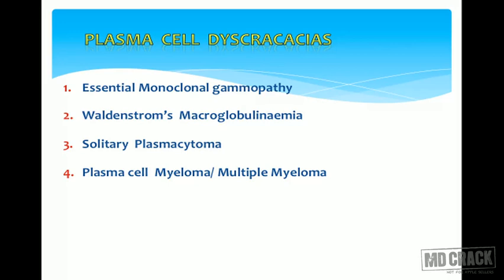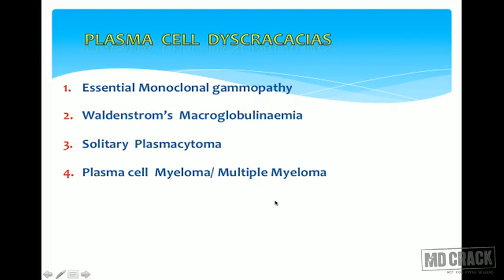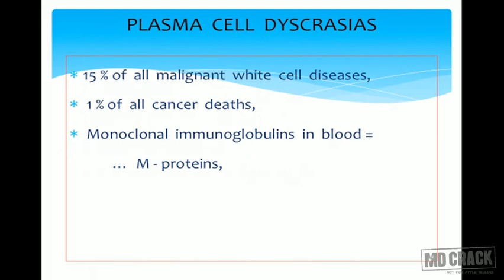There are four categories of plasma cell dyscrasia: essential monoclonal gammopathies, Waldenström's macroglobulinemia, solitary plasmacytoma which involves only one bone or one lesion, and plasma cell myeloma or multiple myeloma when it involves multiple bones. I will mainly deal with multiple myeloma, which is the most common. It constitutes around 15% of all malignant white cell disorders and is responsible for 1% of cancer deaths.